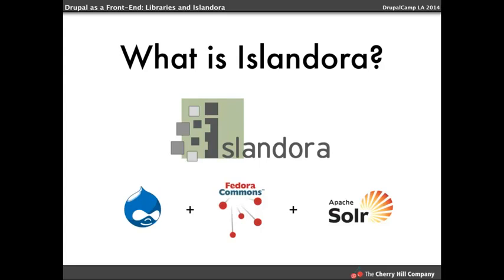So what Islandora is made up of is Drupal, Fedora Commons — which is a repository system — and Apache Solr. These three systems work in harmony so that digital objects can be stored and tracked in a robust way. They can be accessed through Solr because that's how you can reach into the repository and find things through your queries.